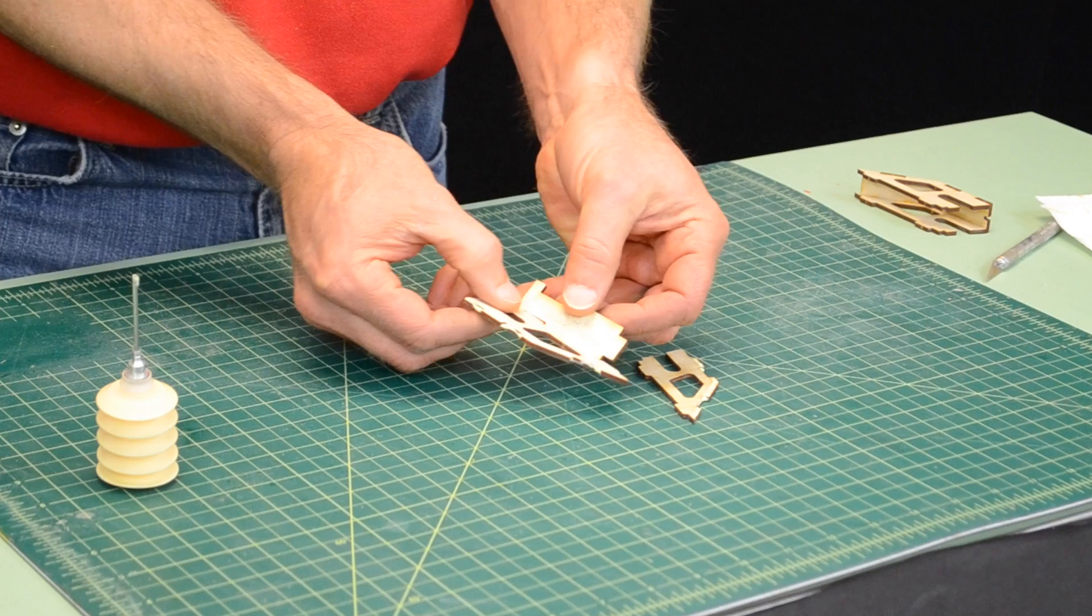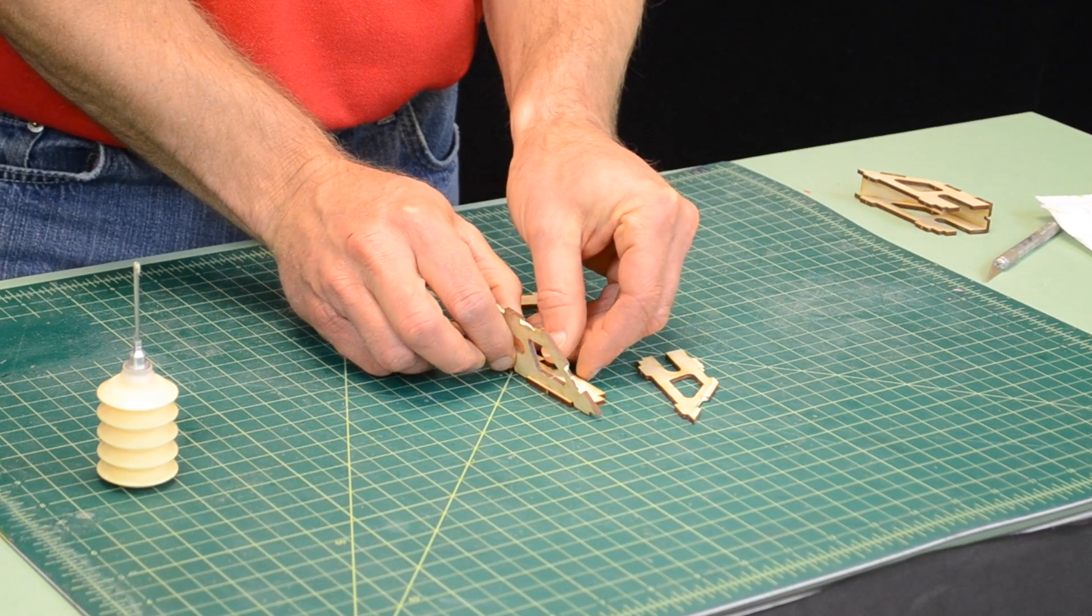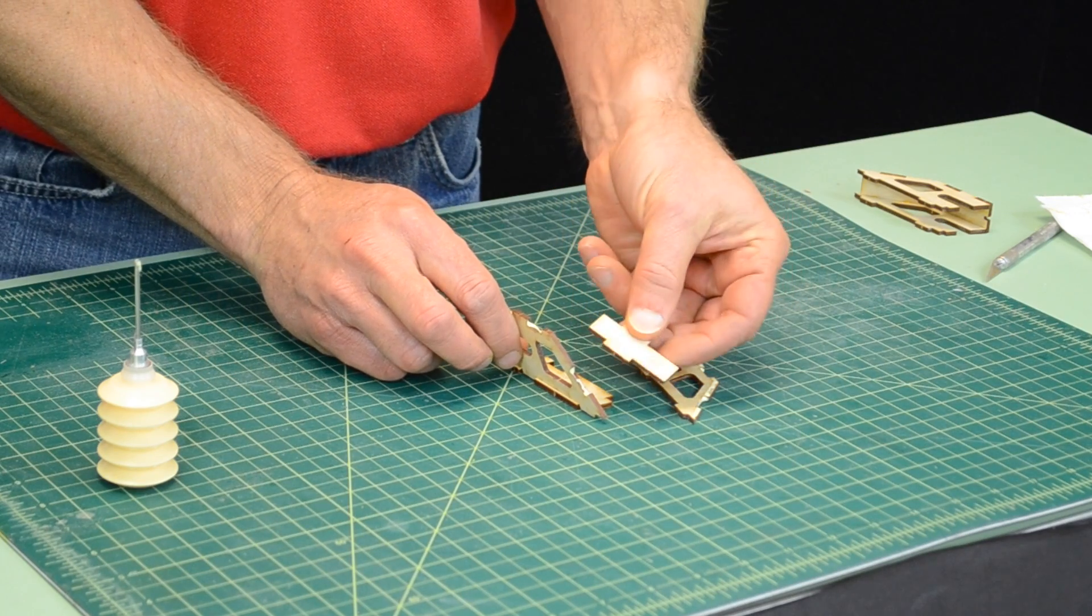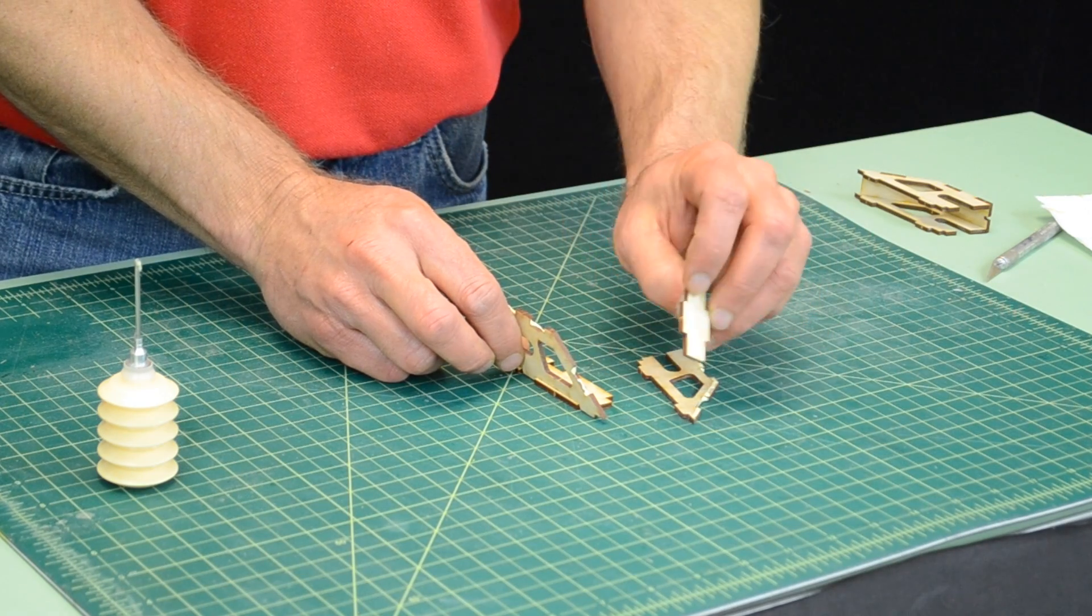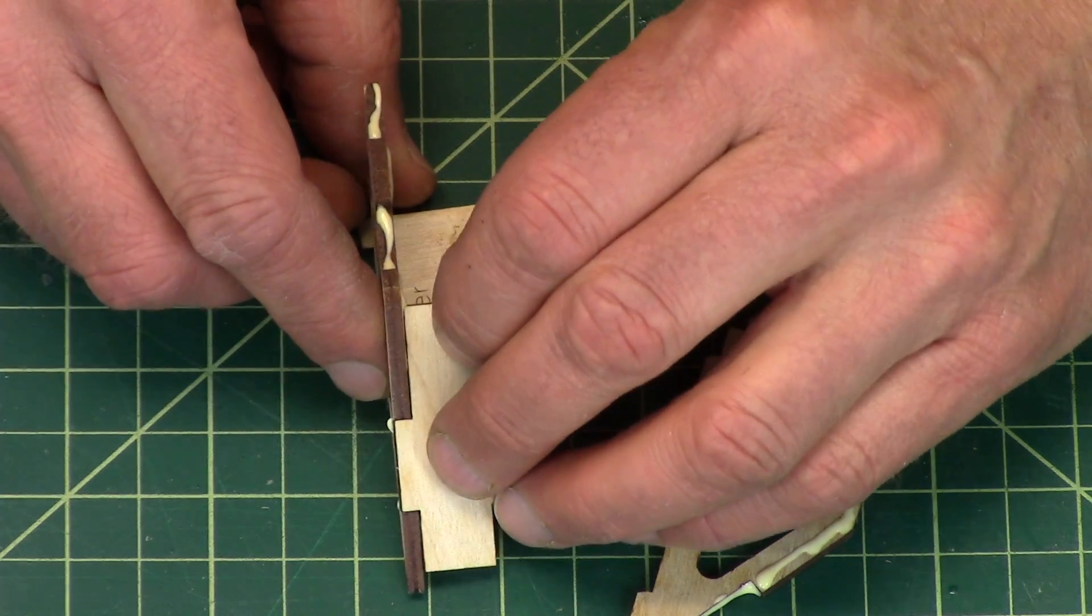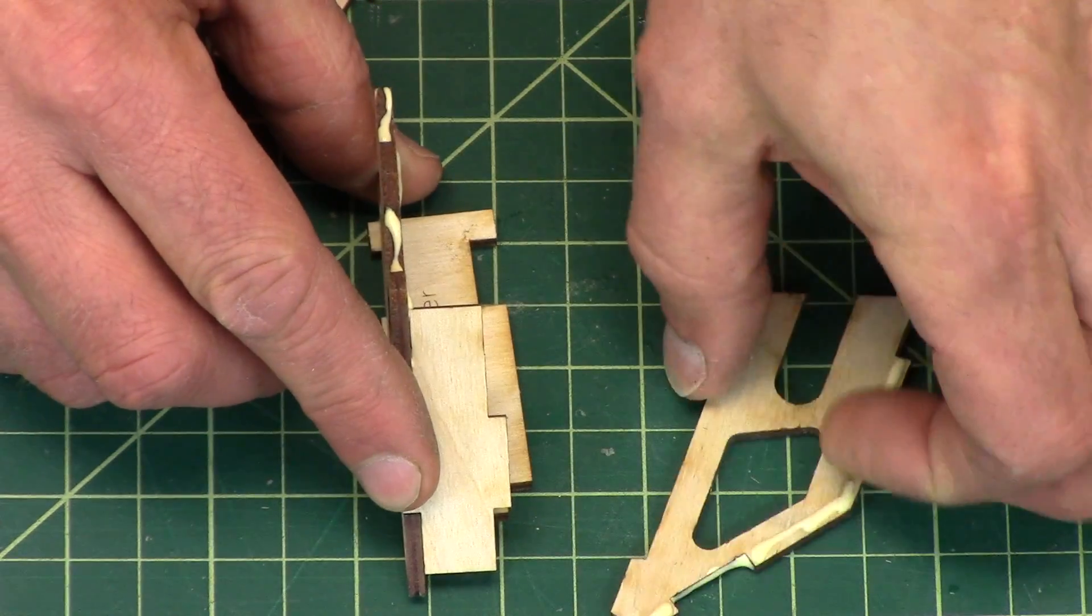And now the spacer is going to go on the bottom, and that's going to help us to align things. So D3 is going to go on the front. I'm going to turn it inside out so that you can't see the lettering. But it's up to you. If you want it to show, that's fine. It will work just as well.